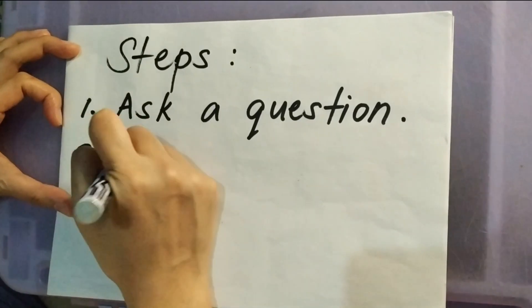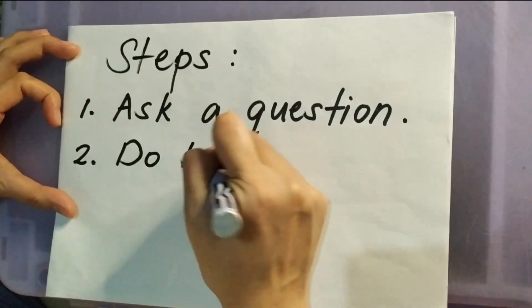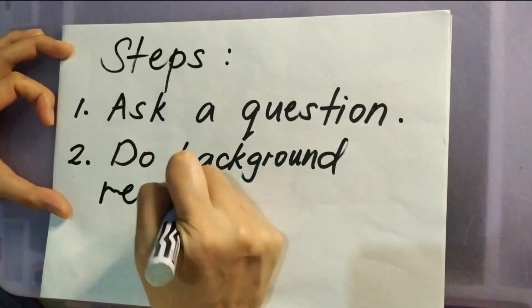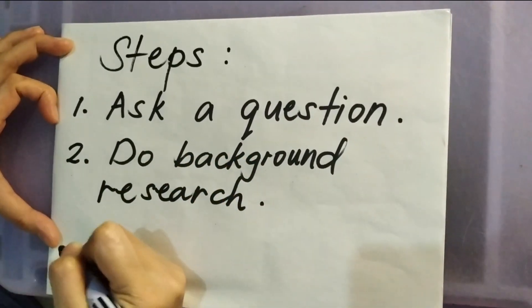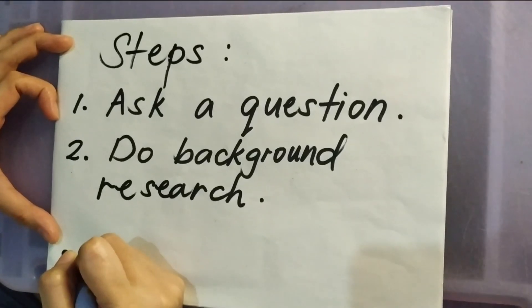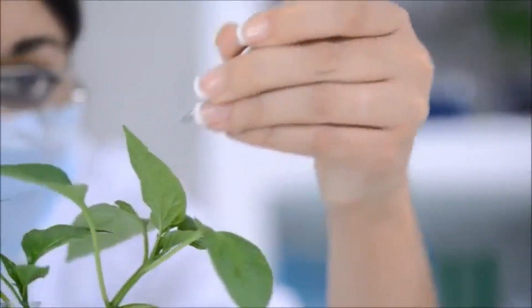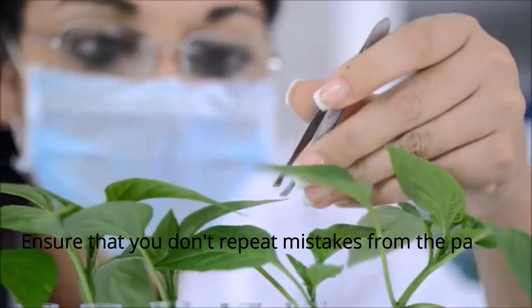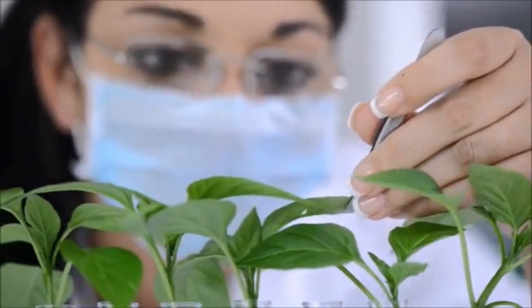Then, you need to do background research. Use library and internet research to help you find the best way to do things and ensure that you don't repeat mistakes from the past.